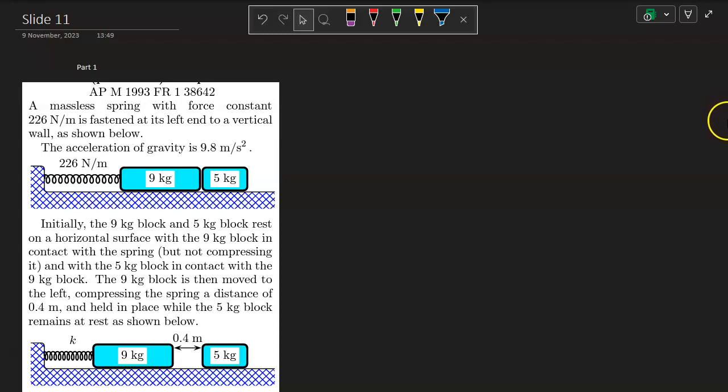Slide 11, four parts. A massless spring with a force constant of 226 Newton per meter is fastened at its left into a vertical wall as shown below.